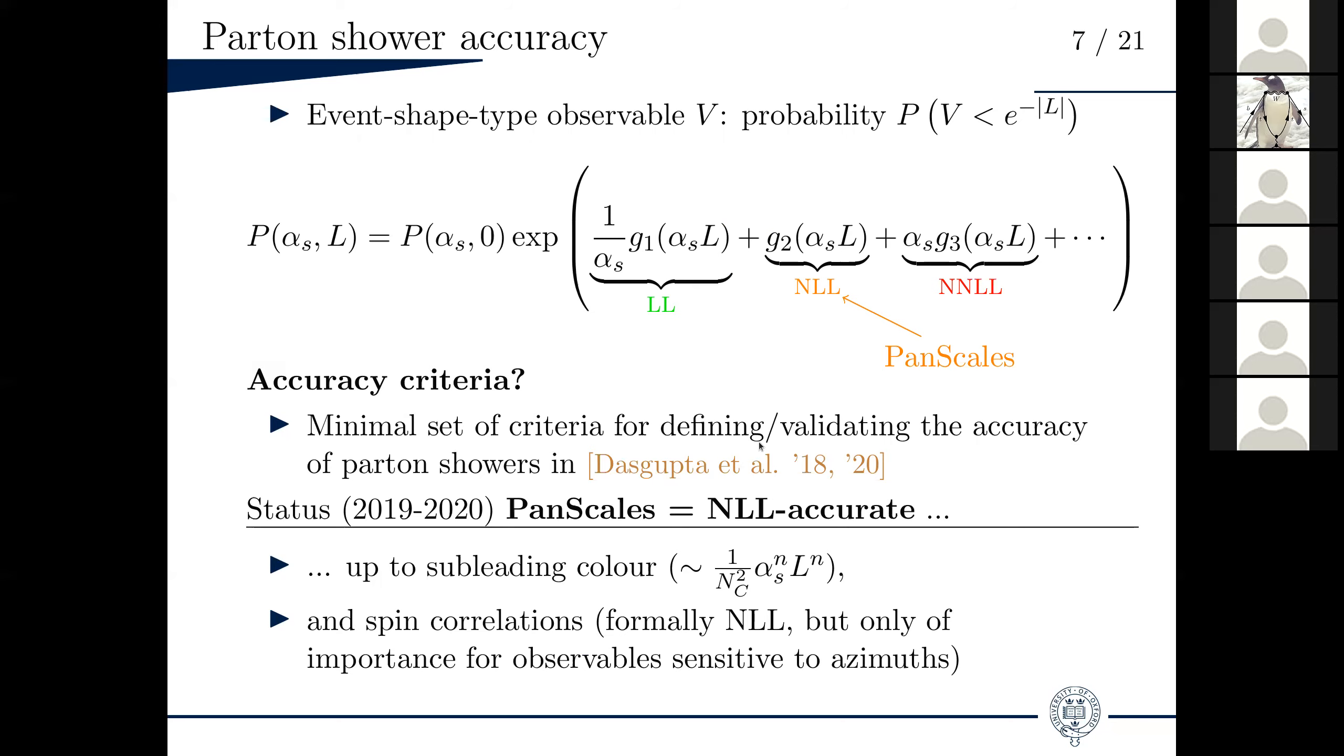As I arrived in Oxford, the PanScales collaboration had basically written a couple of criteria to be able to claim a certain accuracy for a Parton shower algorithm. At that point, they had also designed a family of showers, which are called the PanScales showers, which were demonstrated to be NLL accurate according to these criteria. So NLL accurate, but not quite. They were NLL accurate again in the large NC limit. So up to subleading color, which are terms that are next to leading log. So belonging to this set of terms, but suppressed by a factor of one over NC squared. In the finite NC limit, this factor is a factor one over nine. And they didn't have spin correlations, which, as I will explain later, is also an effect that appears next to leading log.